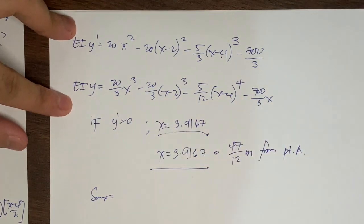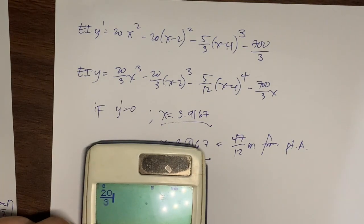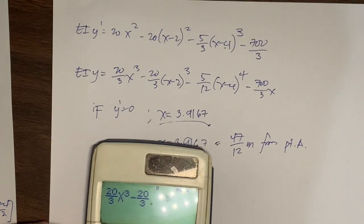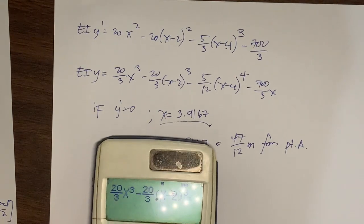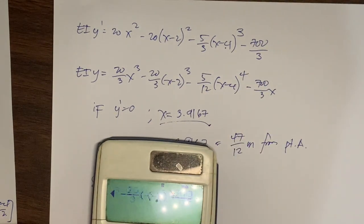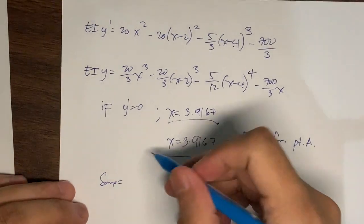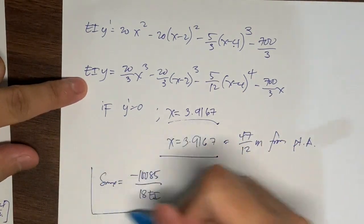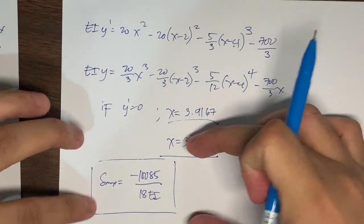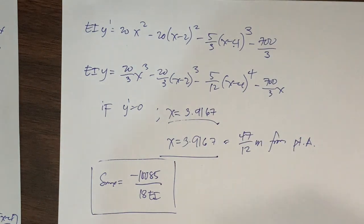To find the maximum deflection, substitute x equals 47/12 into the deflection equation, discarding the uniform load term since x is less than 4. This gives EI·y_max = (20/3)(47/12)³ minus (20/3)(47/12 minus 2)³ minus (700/3)(47/12). Computing this gives negative 10,085 over 18, so the maximum deflection is negative 10,085 over 18·EI.